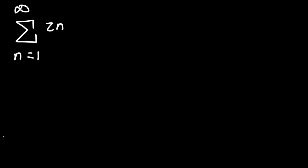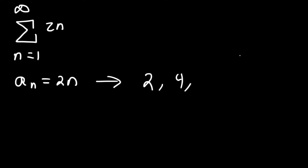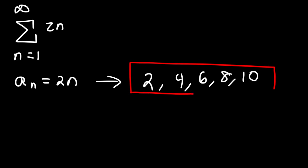In this example, the sequence a sub n is 2n. If you list out the terms of the sequence, the first term a sub 1 is 2, the second term a sub 2 is 2 times 2 which is 4, the third is 2 times 3 which is 6, then 8, and so forth. Here we have a sequence of terms.